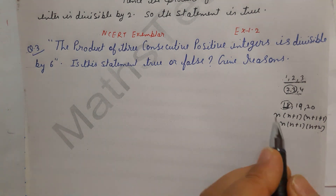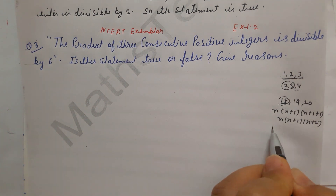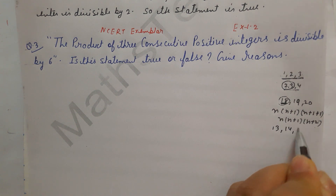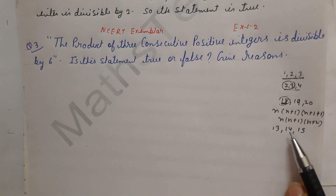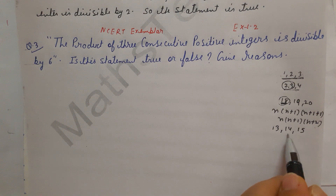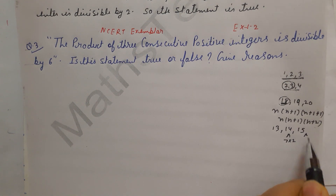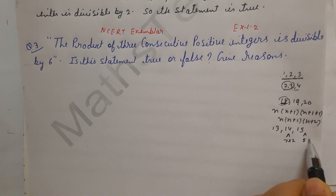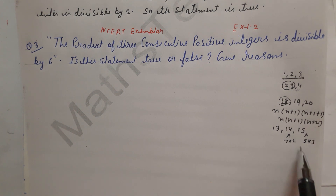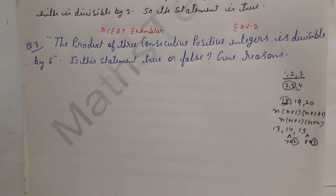For example, taking 13, 14, and 15: no number here is a multiple of 6, but 14 has a factor of 2 (since 14 = 7 × 2) and 15 has a factor of 3 (since 15 = 5 × 3). So there is a 2 and a 3, and 3 times 2 makes 6, and then 6 will be divisible by 6.